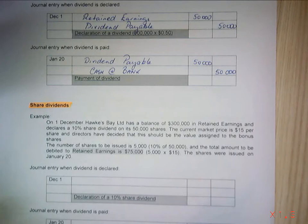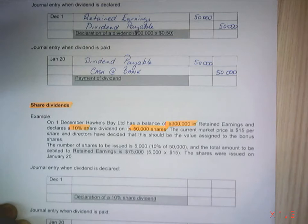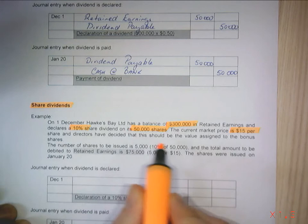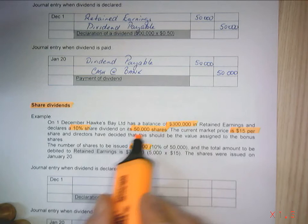Hawkes Bay Limited has a balance of $300,000 in its retained earnings and declares a 10% share dividend on its 50,000 shares. The current market price is $15 per share, and the directors have decided that this should be the value of the bonus shares. The number of shares to be issued is 5,000 — which is 10% of 50,000.